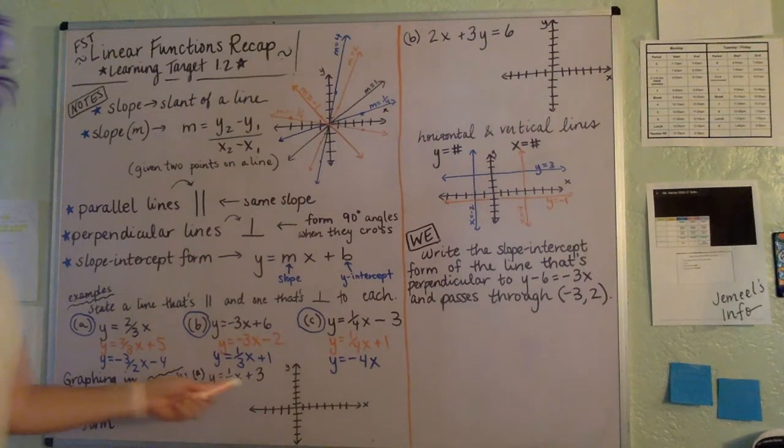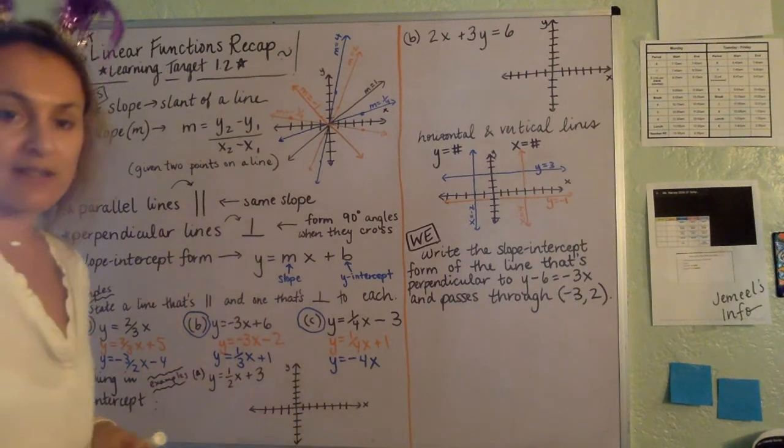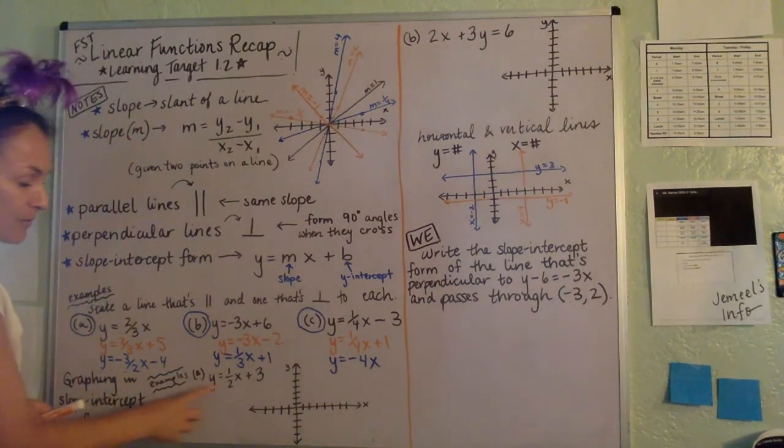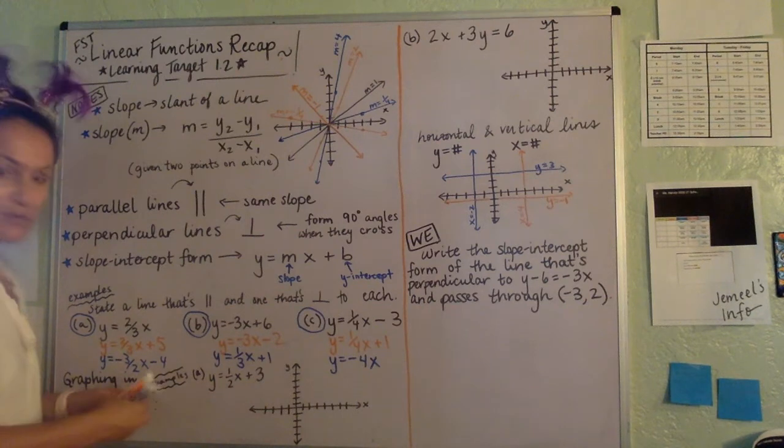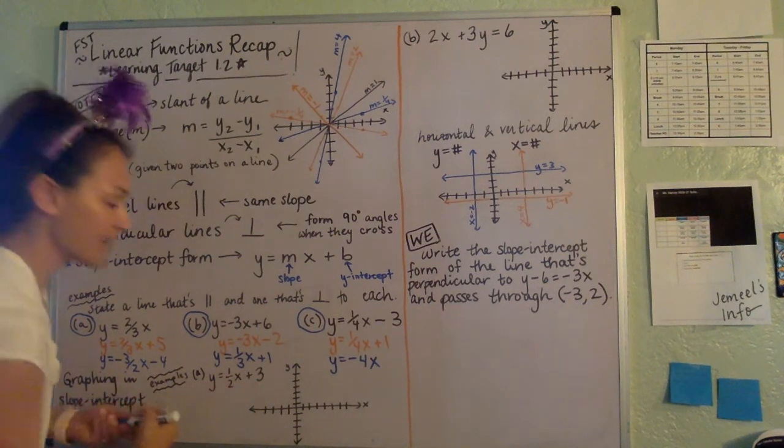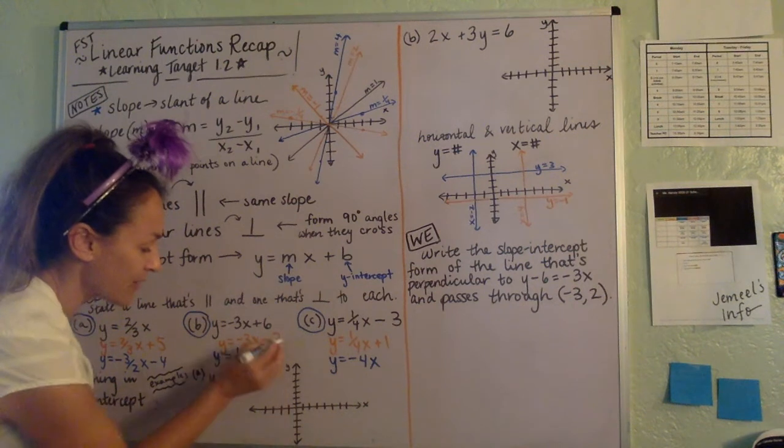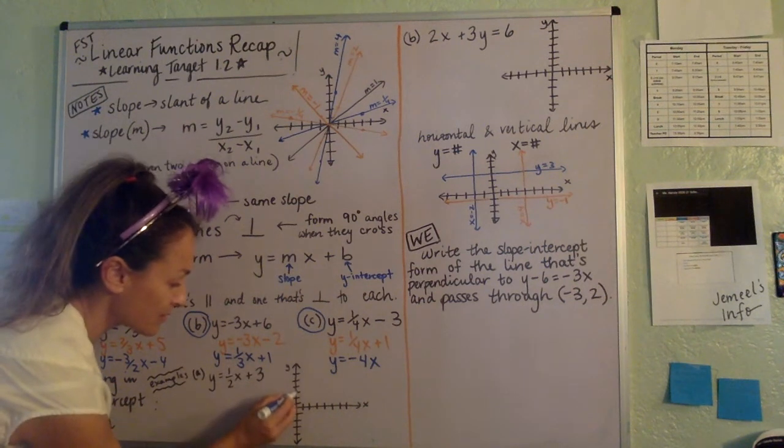Let's just look at Y equals MX plus B format and let's just practice our graphing. So for example, Y equals 1-half X plus 3. Let's just remember you maybe want to start with the Y-intercept and plot that. So where does it cross the Y-axis? It crosses at 3, 1, 2, 3, boom.